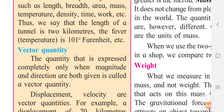Displacement — you are changing your place from A to B. While changing your place, you are going in a certain direction and traveling a certain distance, say 5 km. So displacement is a vector quantity because both magnitude and direction are involved.